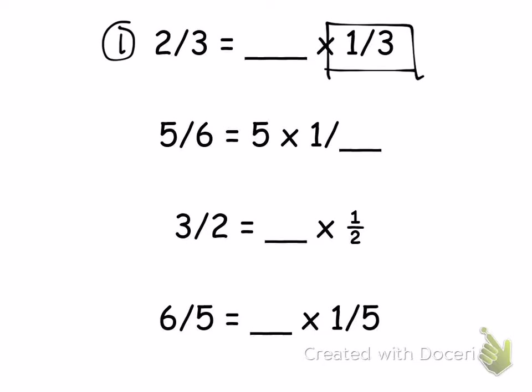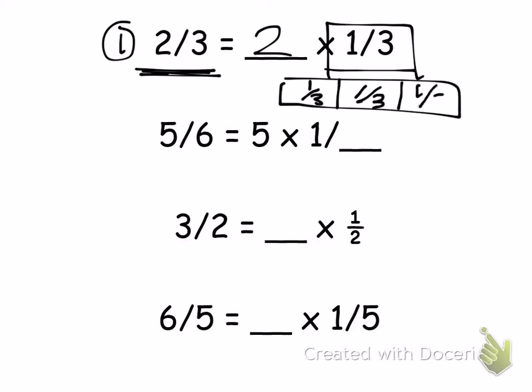Remember, the unit fraction is 1 third. So, of 2 thirds, the unit fraction or one part of that whole would be 1 third. In order to get 2 thirds, I would have to multiply 1 third times 2. So, let's take a look. If I had 1 third and 1 third and 1 third. In order to get 2 thirds out of that, I would need 1 and 2. 2 times 1 third.